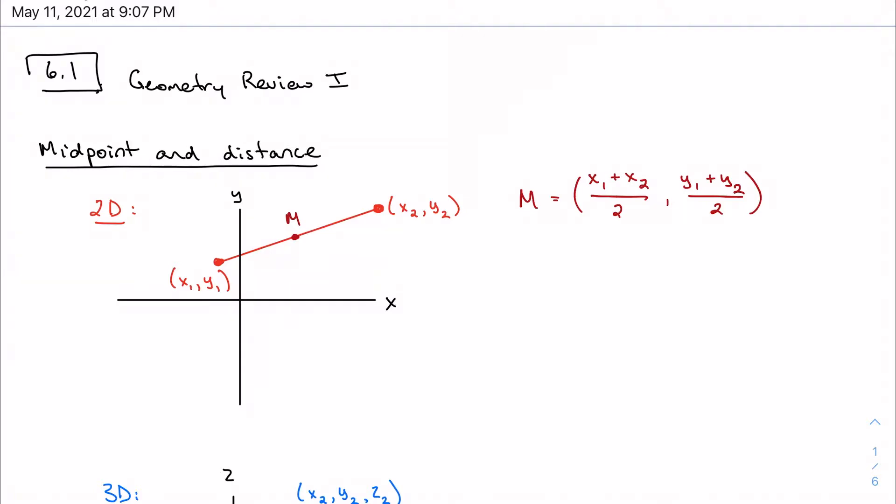Then distance is given based off of the Pythagorean theorem. It's the square root of x2 minus x1 squared plus y2 minus y1 squared. So this is based on the Pythagorean theorem.